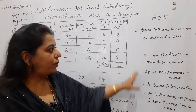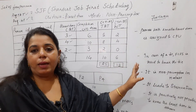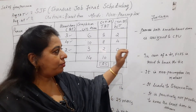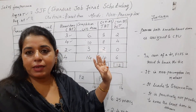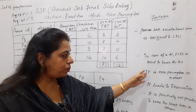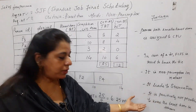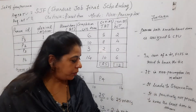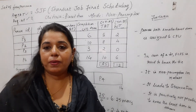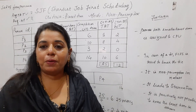To summarize the main features of SJF: process with the smaller burst time is assigned to the CPU; in case of a tie, FCFS is used to break it; it is non-preemptive in nature; it leads to starvation; and it is practically not possible to know the burst time in advance. This is how you solve problems using Shortest Job First.